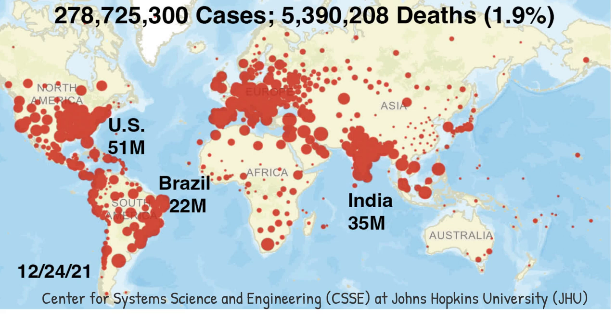Chinese also traveled to Seattle, explaining the first outbreak in the U.S. As shown on this map from the Center of Systems Science and Engineering, Johns Hopkins, as of December 24, 2021, there have been nearly 279 million cases of COVID-19 and 5.4 million deaths, for a death rate of 1.9%. The U.S. continues to lead the world with 51 million cases, followed by India with 35 million cases, and Brazil with 22 million cases.